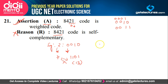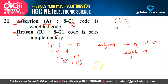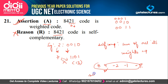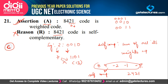For a code to be self-complementary, the sum of all its weights must equal 9. For example, the 8-4-(-2)-(-1) code has weights summing to 9, so it is self-complementary. The 2421 code is also self-complementary. Since 8421 does not satisfy this condition, the reason is wrong. Assertion is correct, reason is incorrect — so the correct option is C.